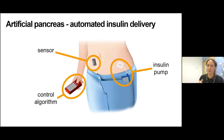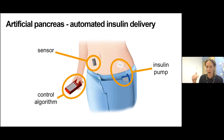As the glucose levels go down, the control algorithm tells the insulin pump less insulin is required. As the glucose levels go up, the control algorithm tells the insulin pump to give more insulin.